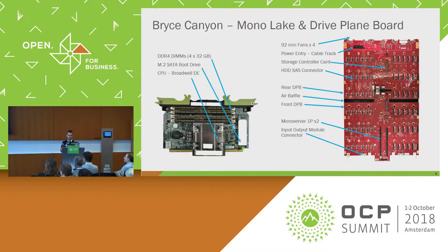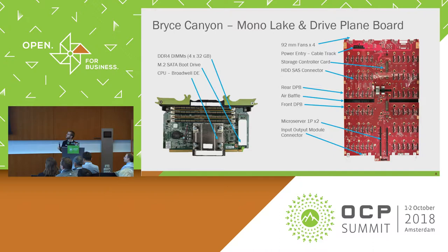On the back of the chassis, you have four 92mm counter-rotating fans and the power entry with a cable track that allows the entire system to roll out from the chassis. This allows everything to be powered so you can service one half of the chassis without taking the other one down. You have the connector for the storage controller card, slots for the 1P microservers, and at the front, the connector for the I/O cards with the BMC and NIC.